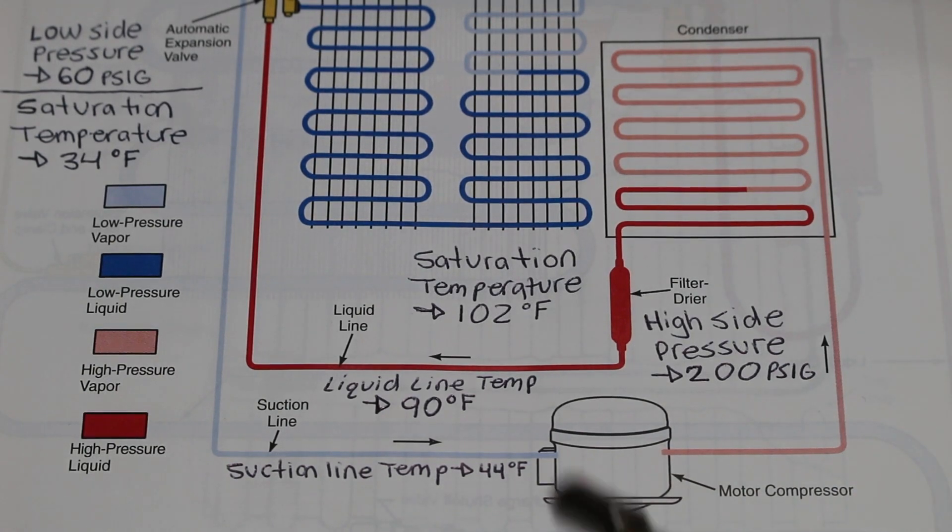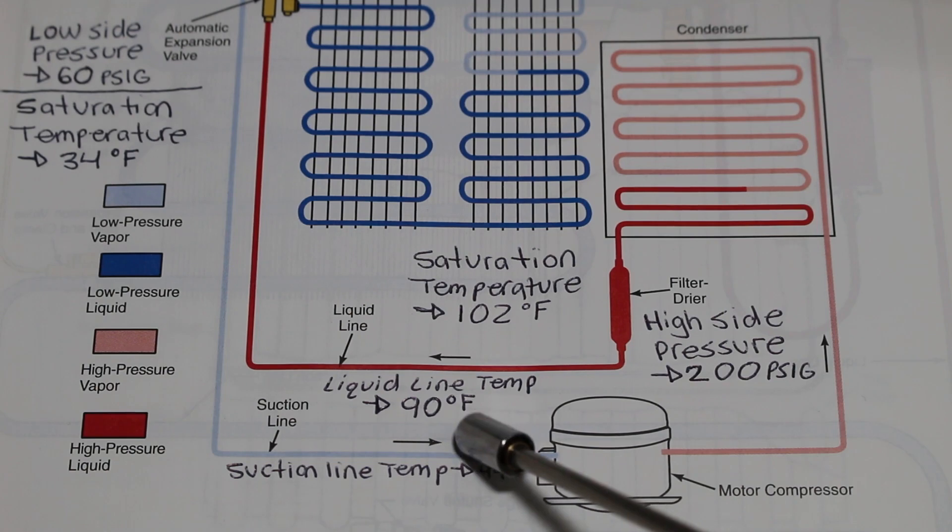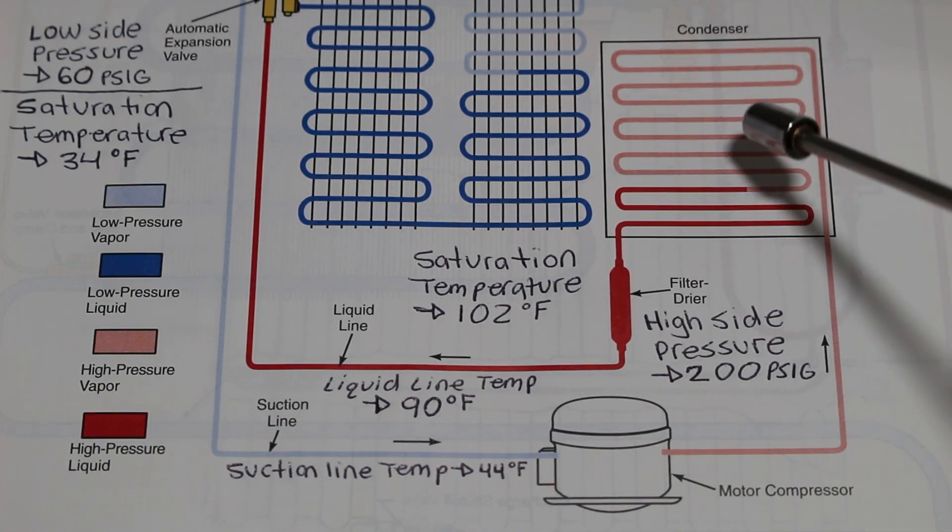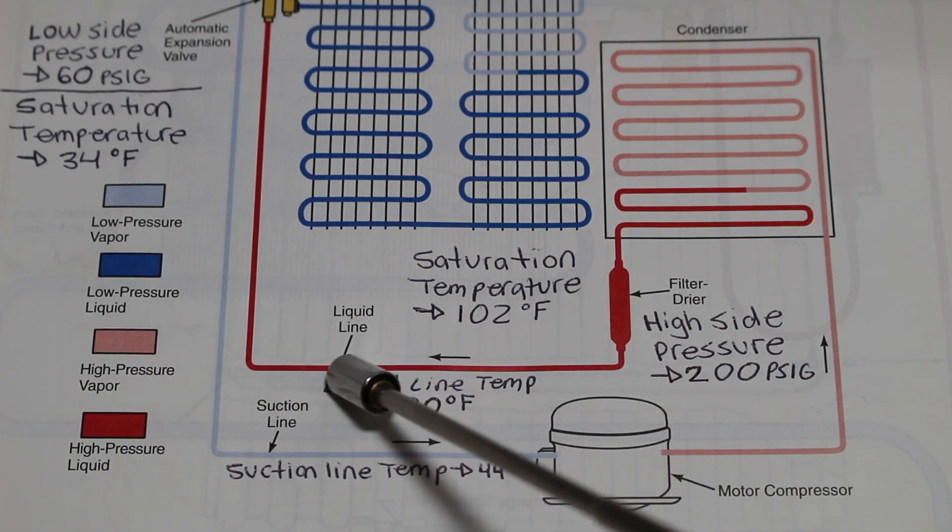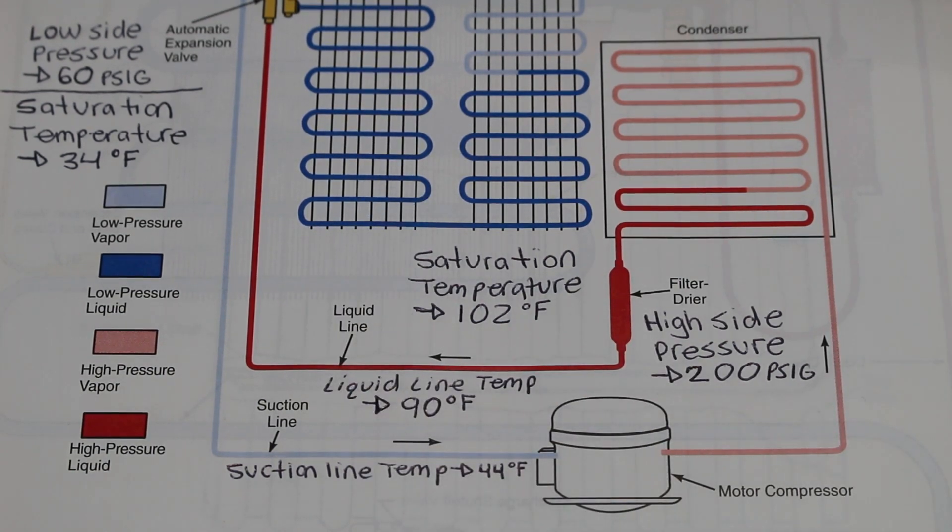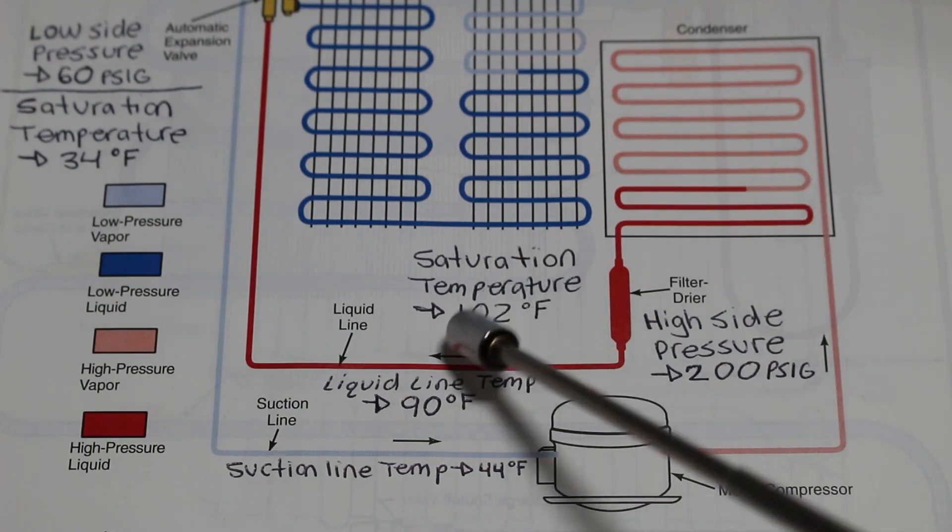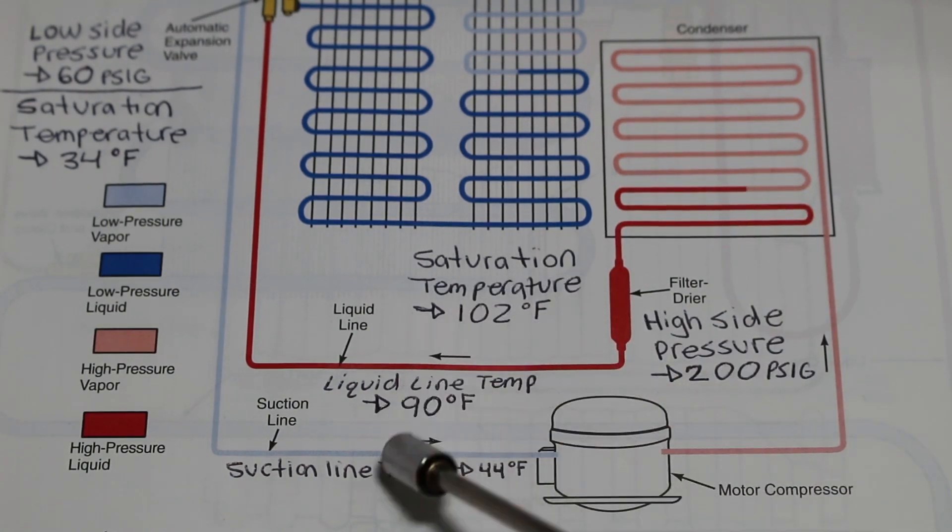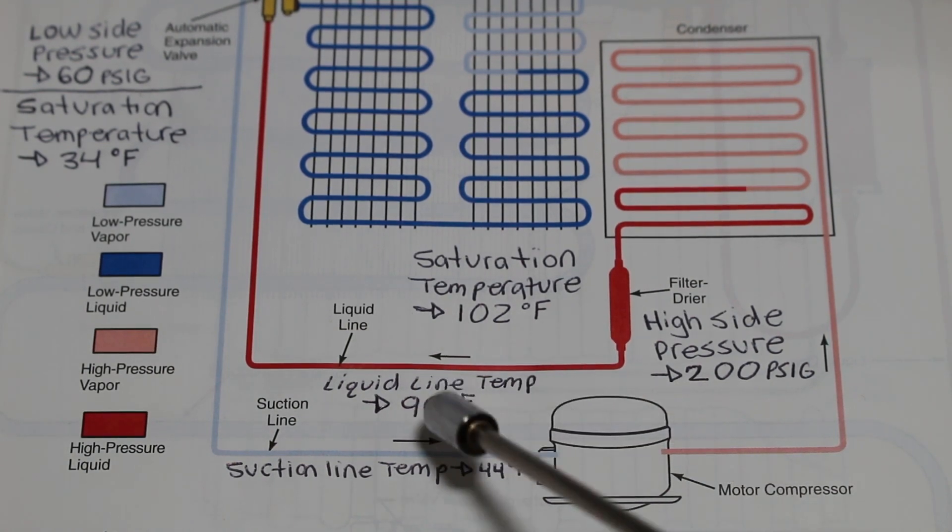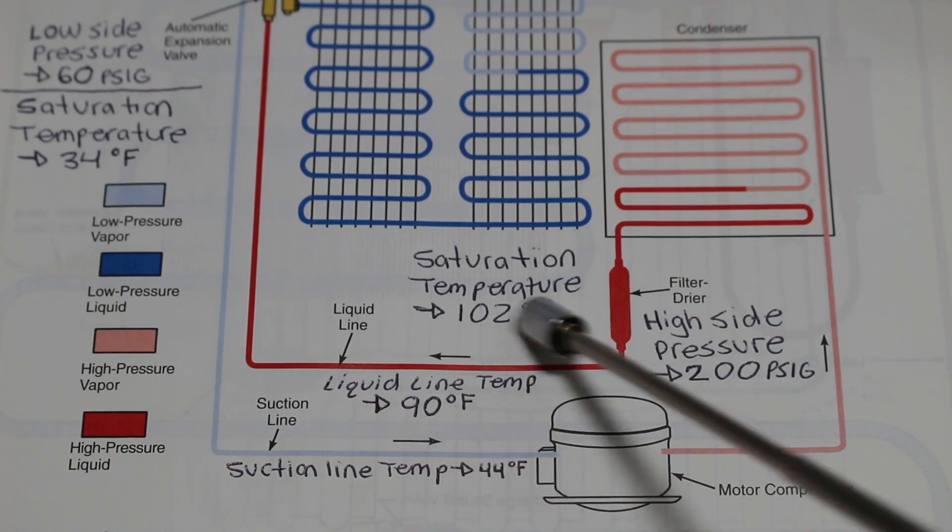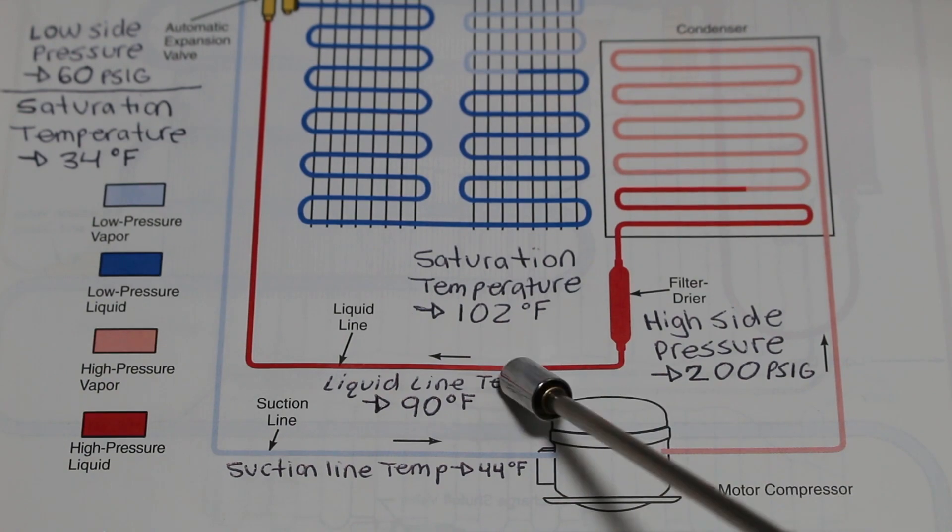In this example, our liquid line temperature is 90 degrees Fahrenheit. As the refrigerant condenses from a vapor into a liquid and travels down the liquid line, we have a decrease in temperature. Subcooling is the difference between our saturation temperature and our liquid line temperature. 102 degrees minus 90 degrees is 12 degrees. So, for this example, our subcooling is 12 degrees.